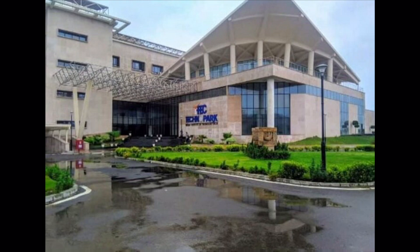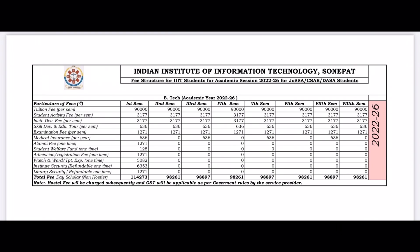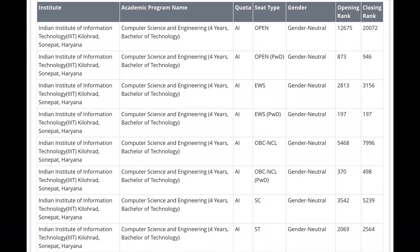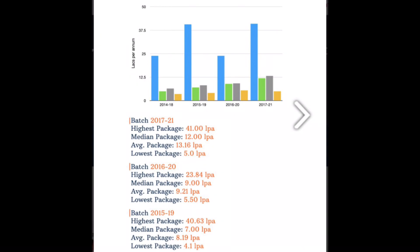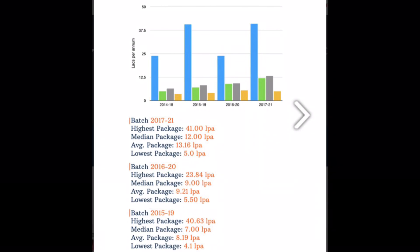Next is IIIT Sonipat. Sonipat offers only 2 courses. You can see the fee structure. In this slide, you will have the cut-off for computer science and engineering, and also for information technology. I will give you data from 2022 to 2023, including the highest, average, and median package figures.